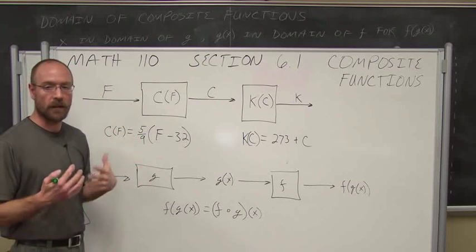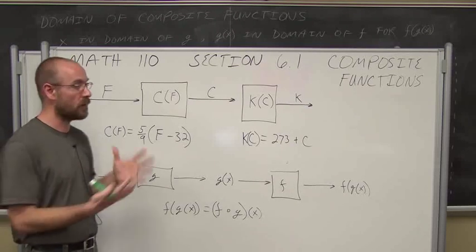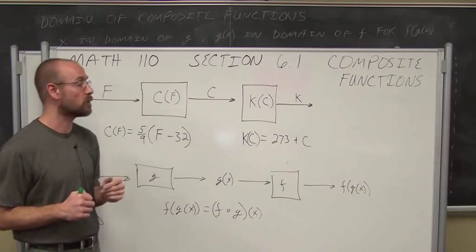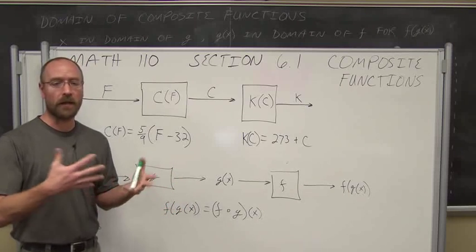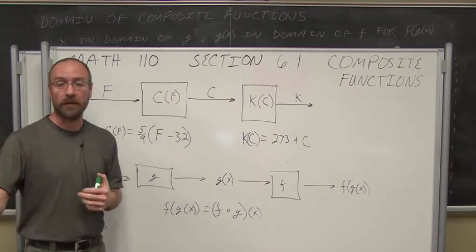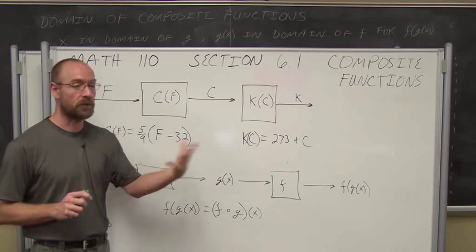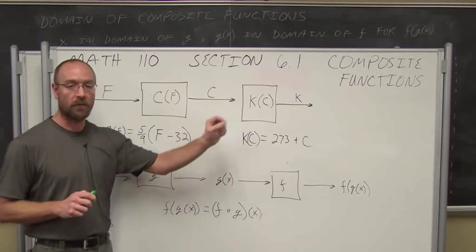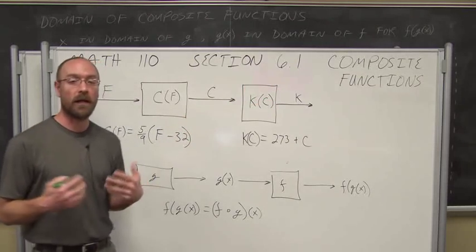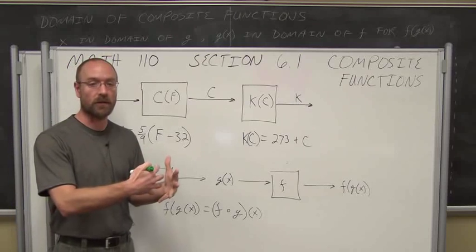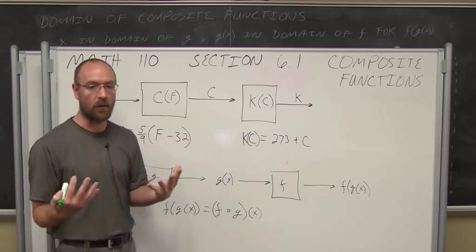The first thing we're going to look at is an application of composite functions. We actually use composite functions all the time; we just don't think of it in algebraic terms. One example would be: let's say you have a utility bill that costs $100, and you make $10 an hour. $10 an hour is your rate of pay — that's a function in itself. Your utility bill that comes every month is a separate function. But if you put the two together and compose one of another, you can say you have to work 10 hours to pay your utility bill. So now your utility bill is a function of hours, essentially.